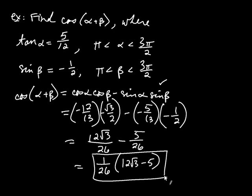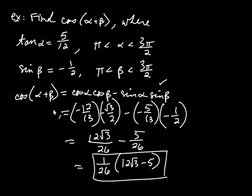What's important to notice is that we never figured out the exact angles alpha and beta, and we didn't have to. We found sine and cosine of each angle from the given information, and used those to find cosine of the sum without a calculator.